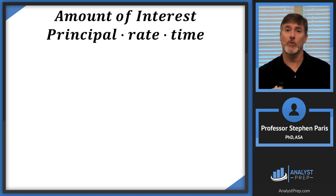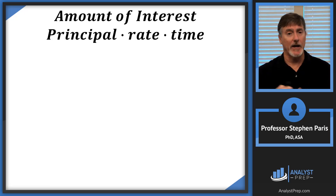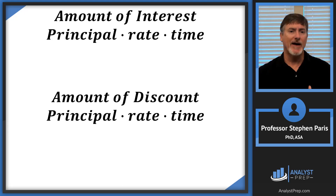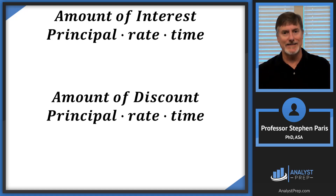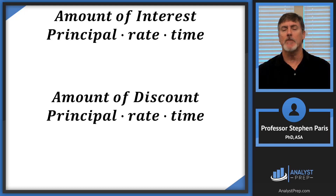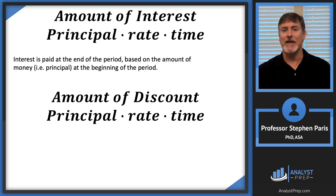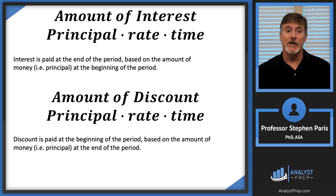Let's go back to where we were calculating the amount of interest as principal times rate times time. That's not going to change. The amount of discount is going to use the same formula also: principal times rate times time. The difference between an interest problem and a discount problem is this: interest is paid at the end of the period based on the principal at the beginning of the period, whereas discount is paid at the beginning of the period based on the amount of money at the end of the period.